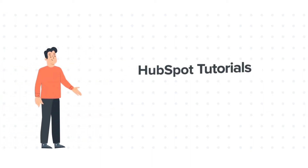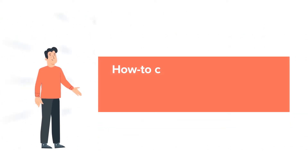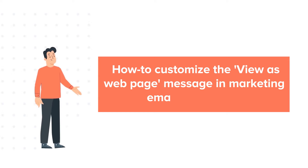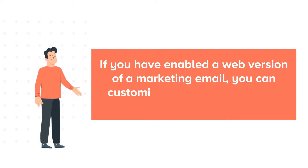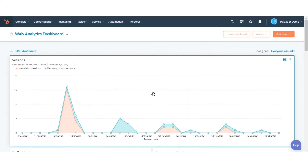Hello and welcome to HubSpot tutorials by Webdo. This is Bob and today's tutorial is about how to customize the view as web page message in a marketing email. If you have enabled a web version of a marketing email, you can customize the text and link that appears in the email. Let's see how you can do that.